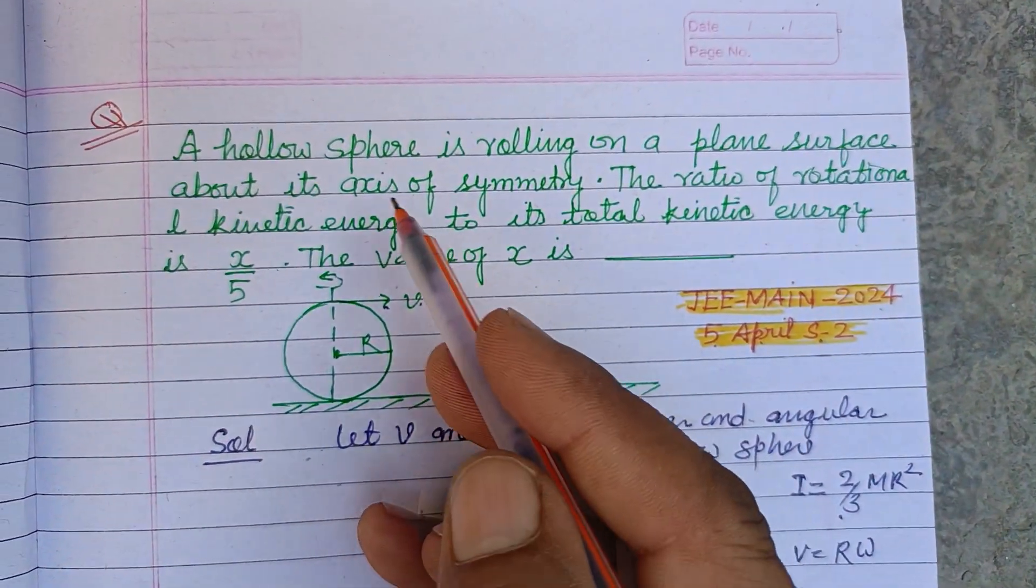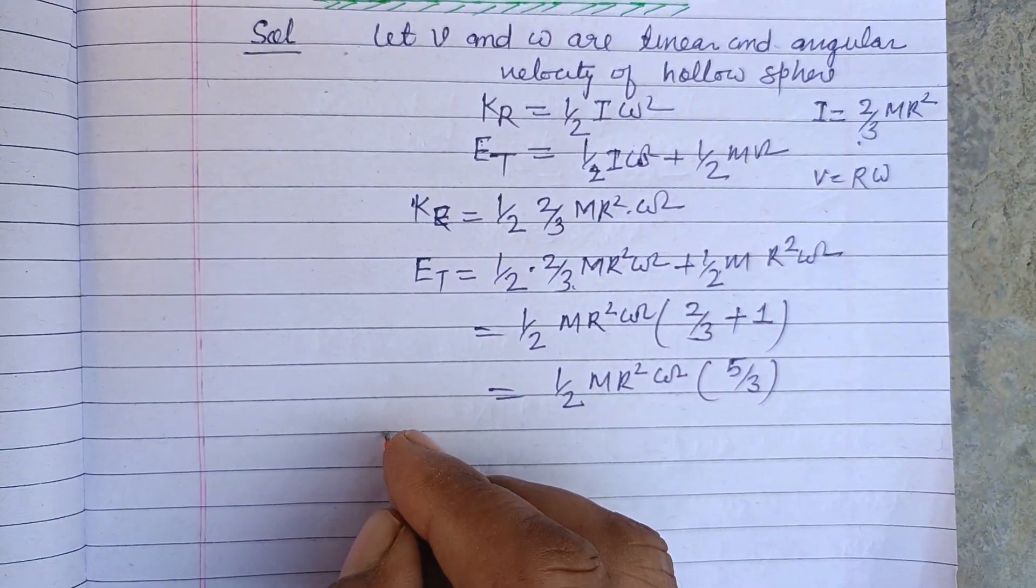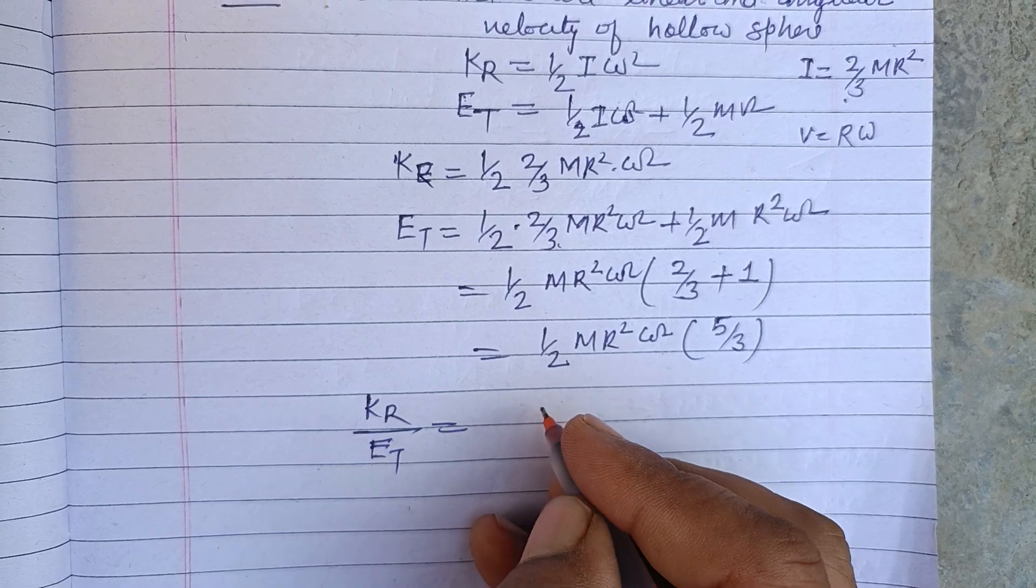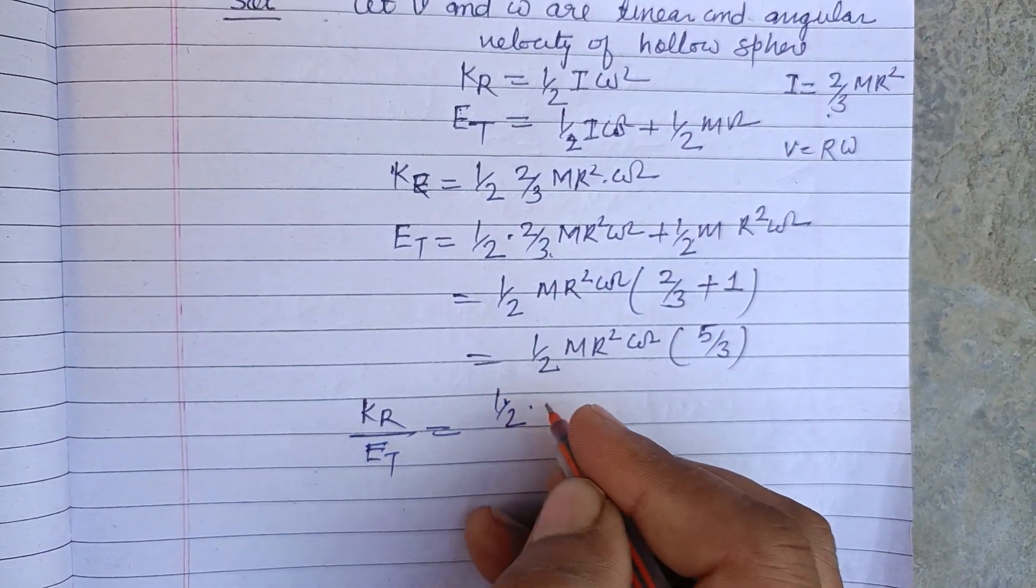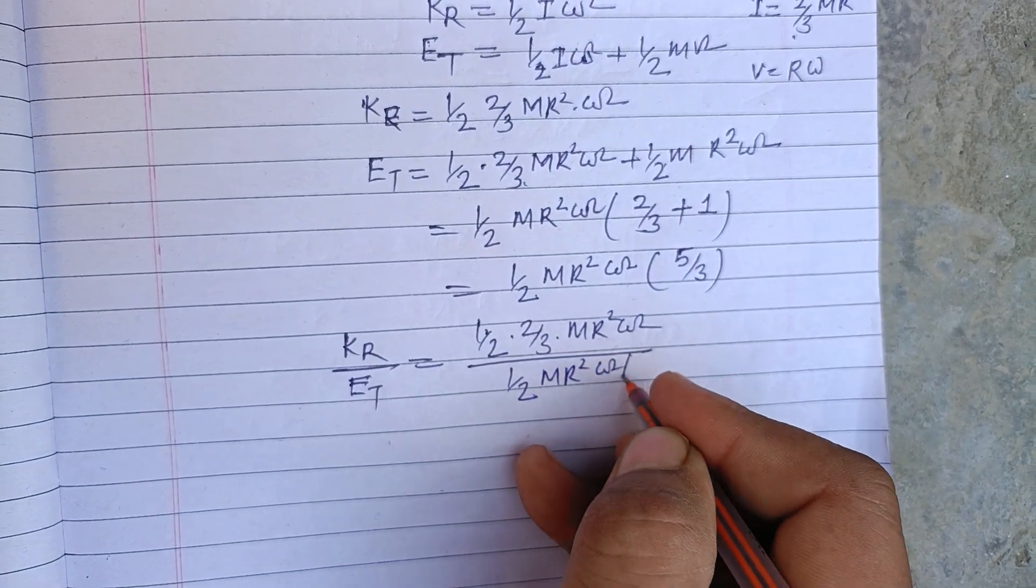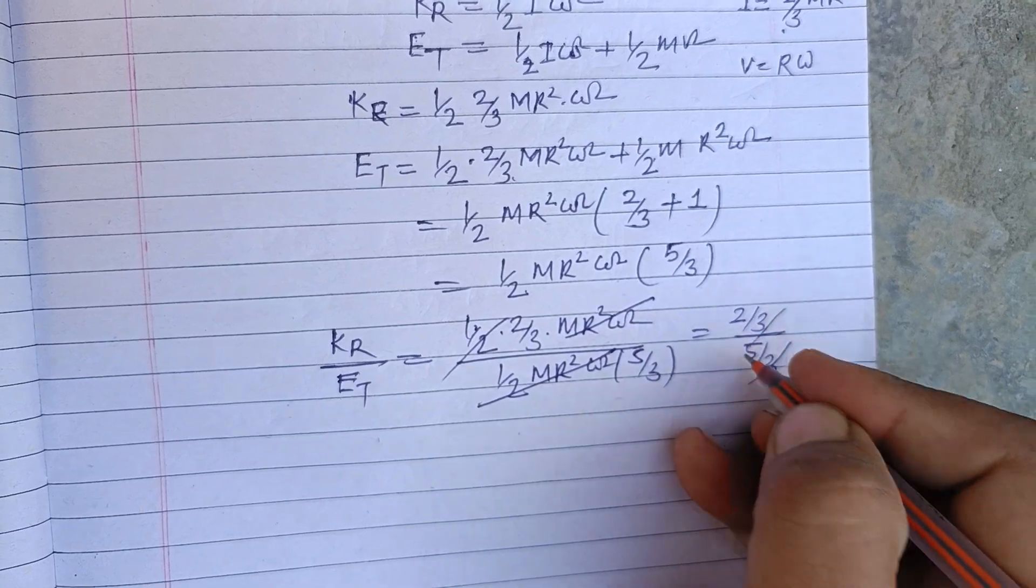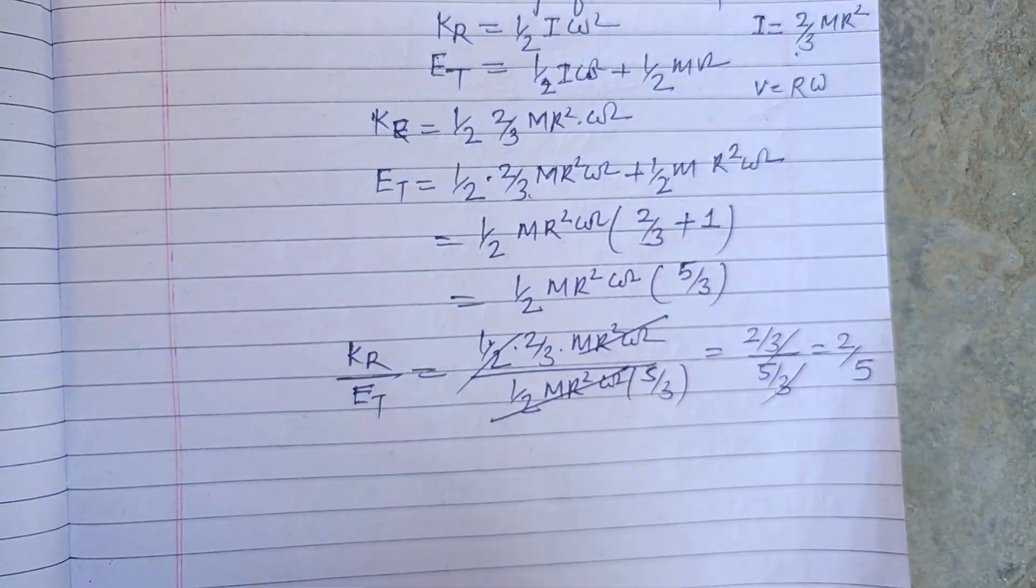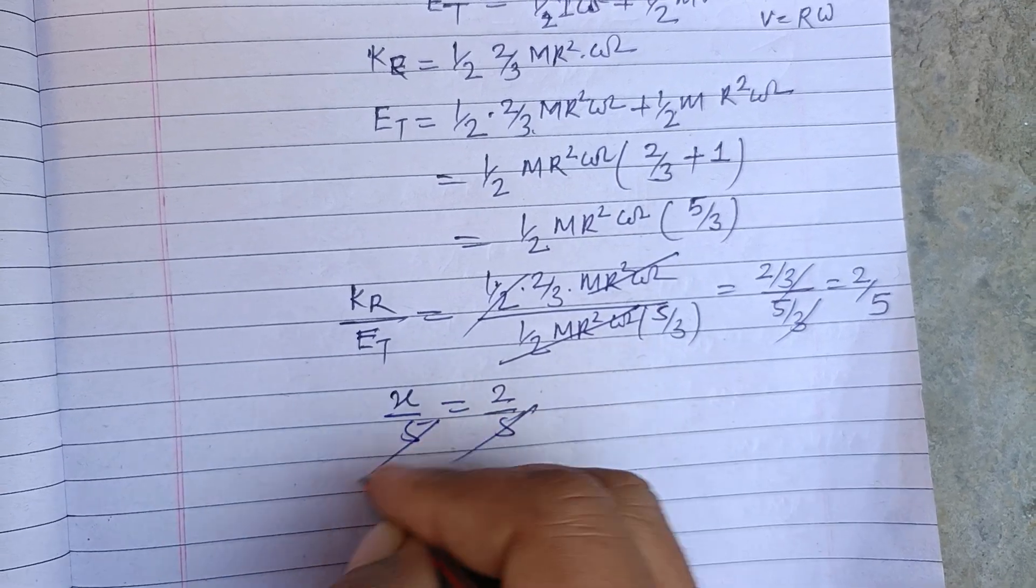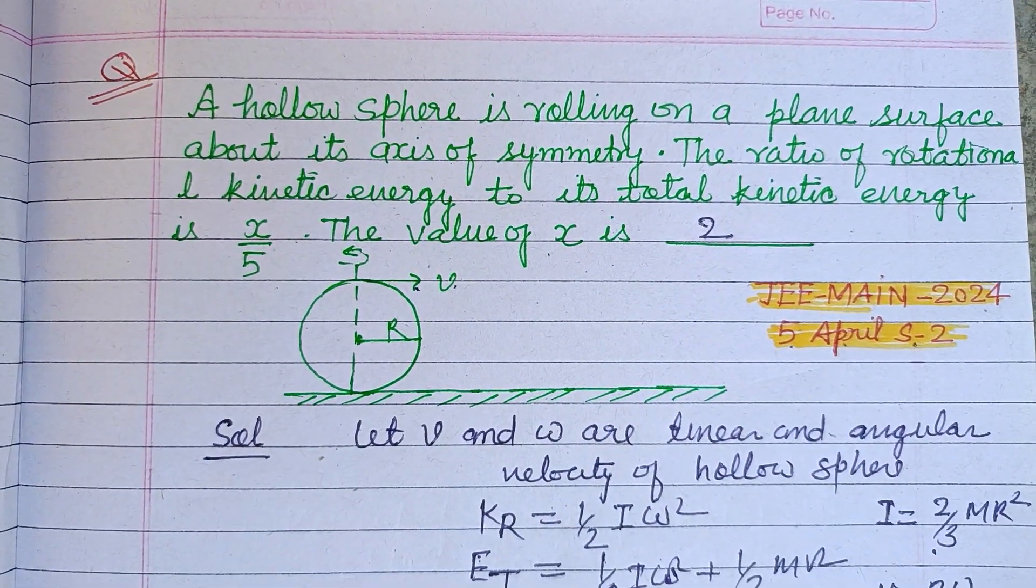Now question is asking the ratio of rotational kinetic energy to its total kinetic energy. So K_R by E_T must be the ratio of rotational kinetic energy to total kinetic energy.